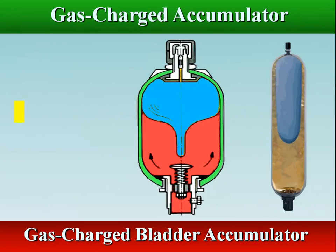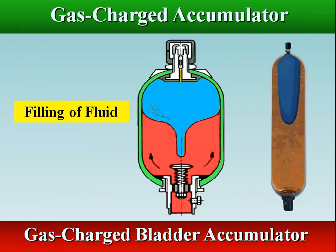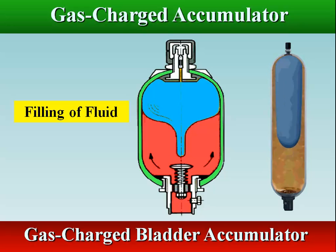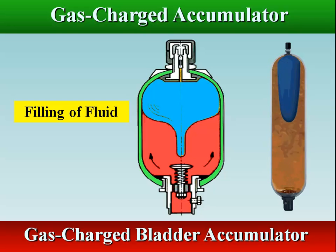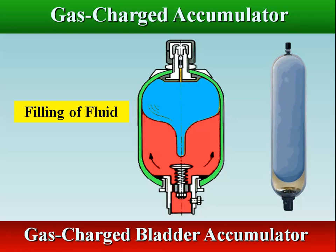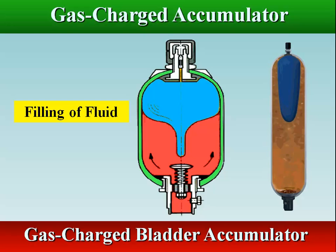When the hydraulic pressure external to the accumulator is higher than the pressure inside the accumulator, oil from the hydraulic circuit is forced into the accumulator, compressing the gas and thereby storing energy in the compressed gas, and also storing a reserve volume of oil around the bladder.